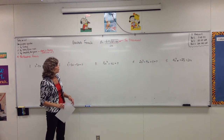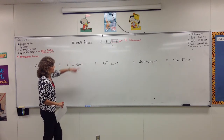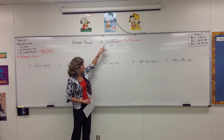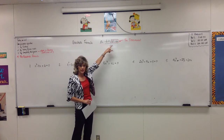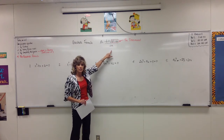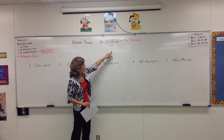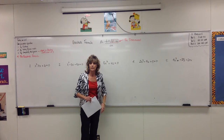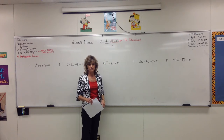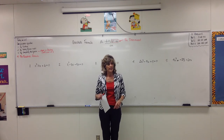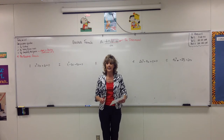We have worked with the quadratic formula — x equals negative b plus or minus the square root of b squared minus 4ac, all over 2a. Today we're talking about the discriminant. The discriminant is just the number underneath the radical; it does not include the radical itself. You can use the discriminant to figure out ahead of time what kind of solutions you're going to have and how many.